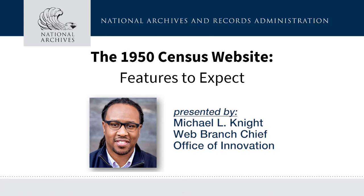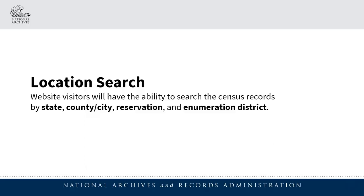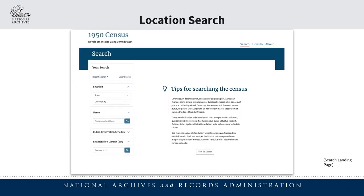In this presentation, I'm going to discuss the features that you can expect to find and use on the site to explore the census records. First up is location search. Website visitors will have the ability to search the 1950 census records by state, county or city, reservation, and enumeration district. Here we see the website's main search page.